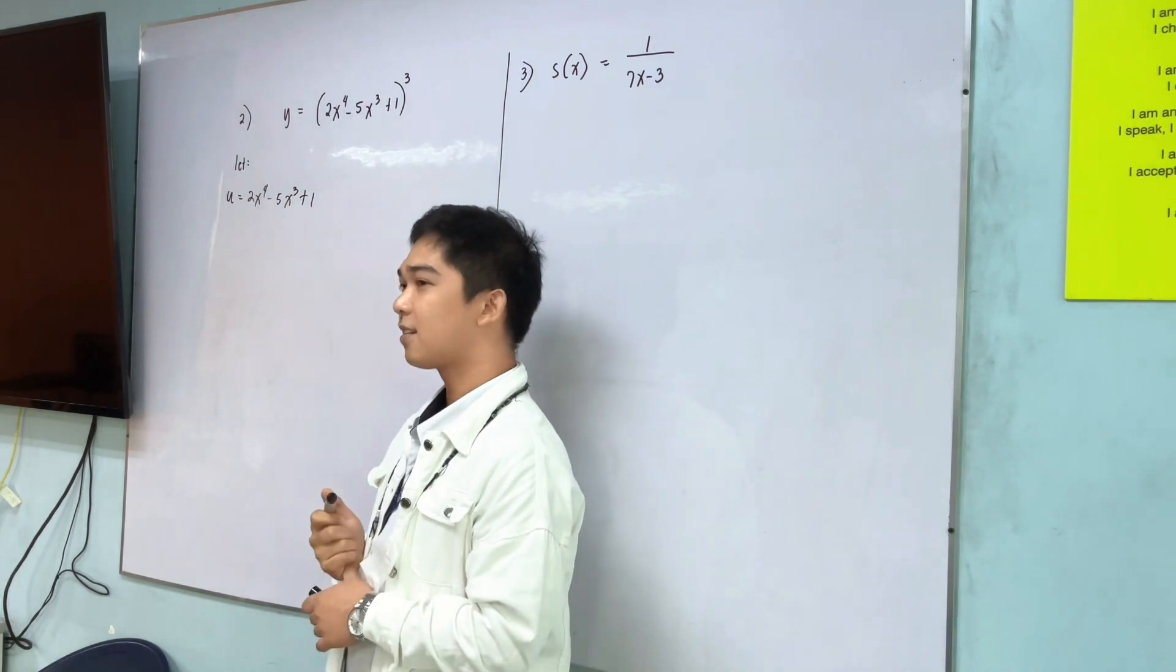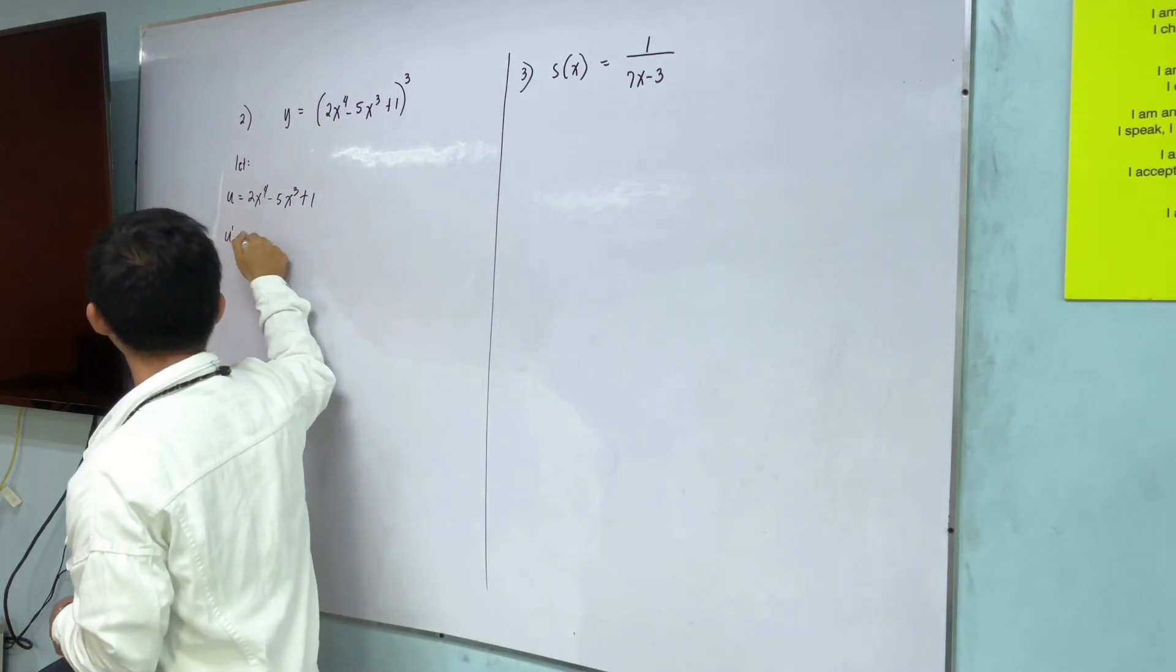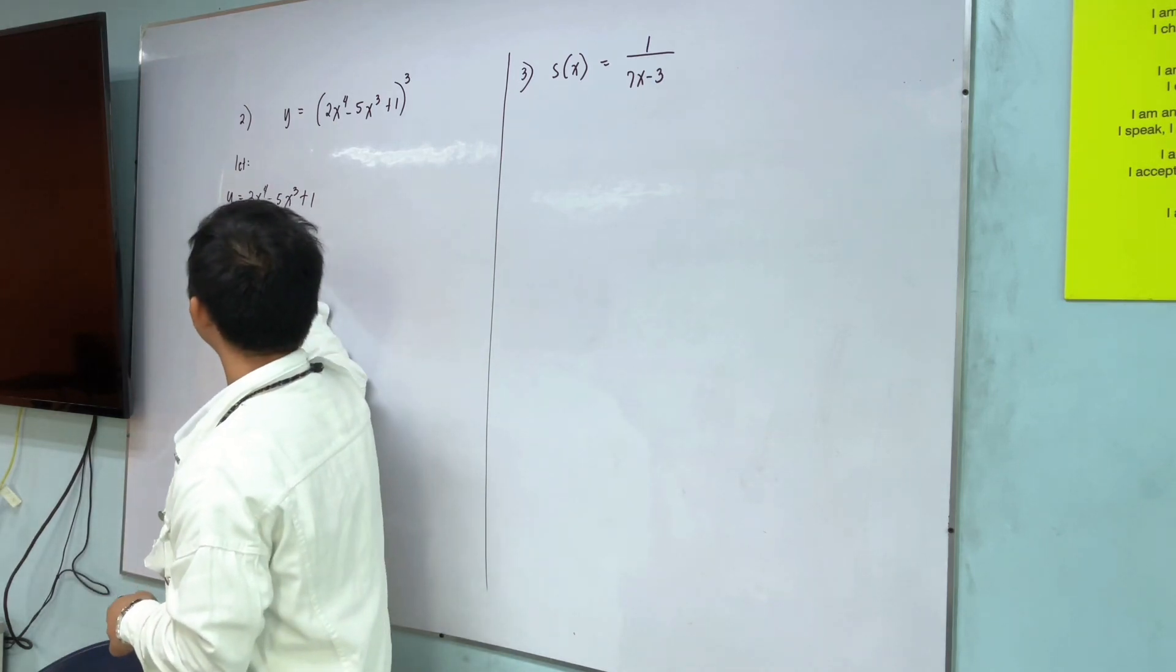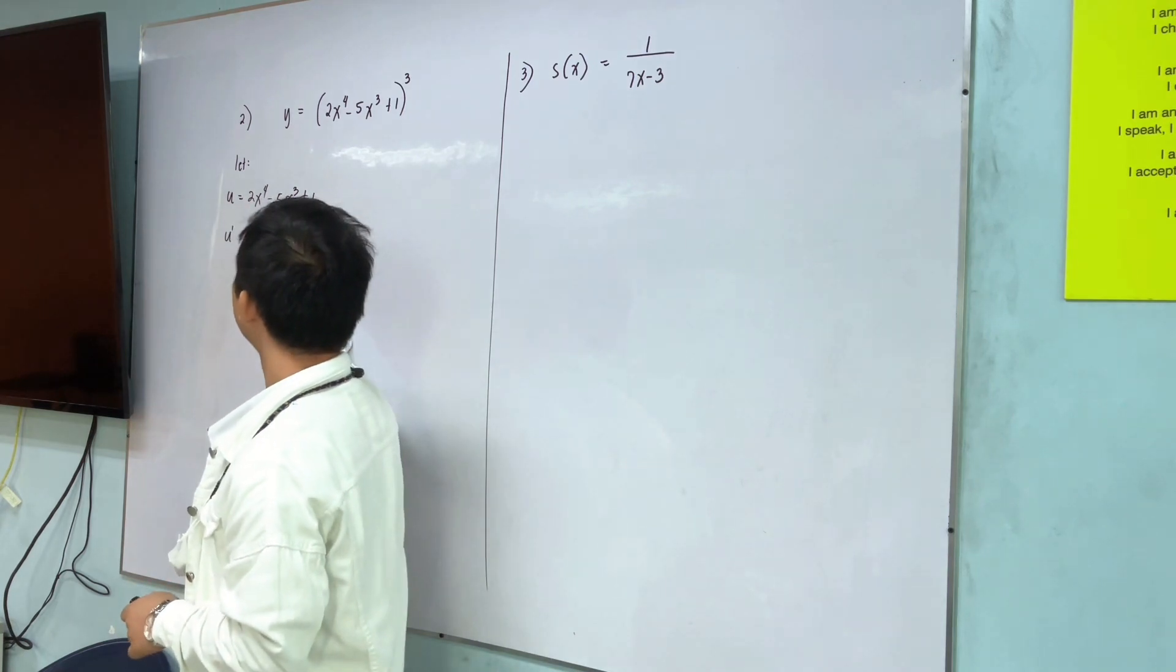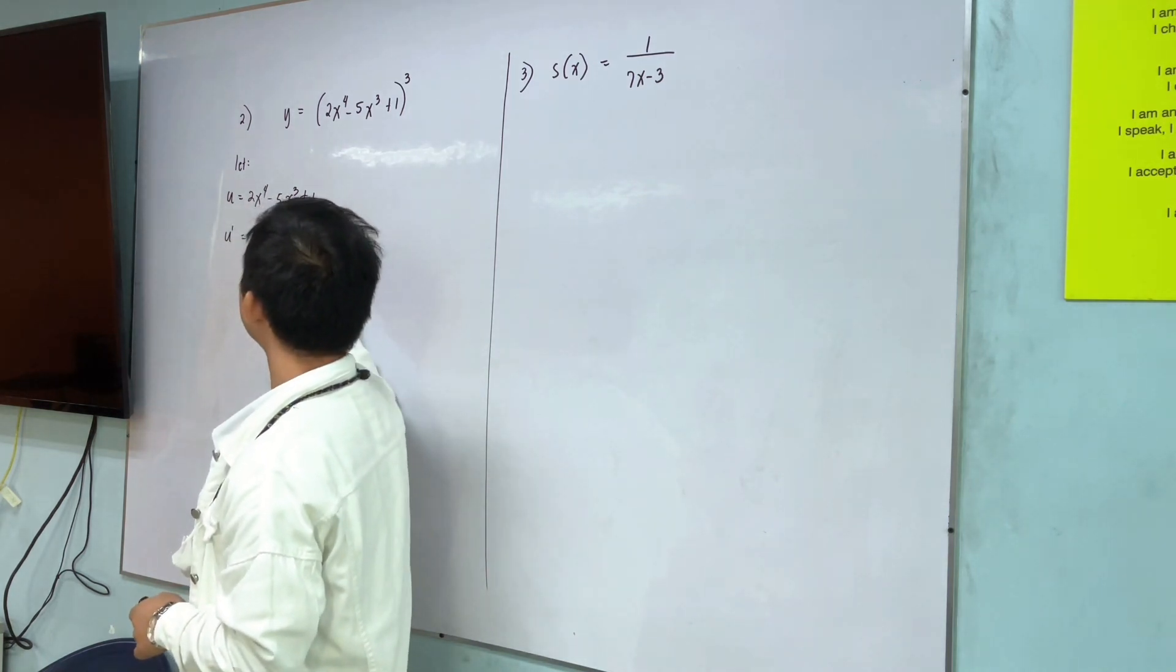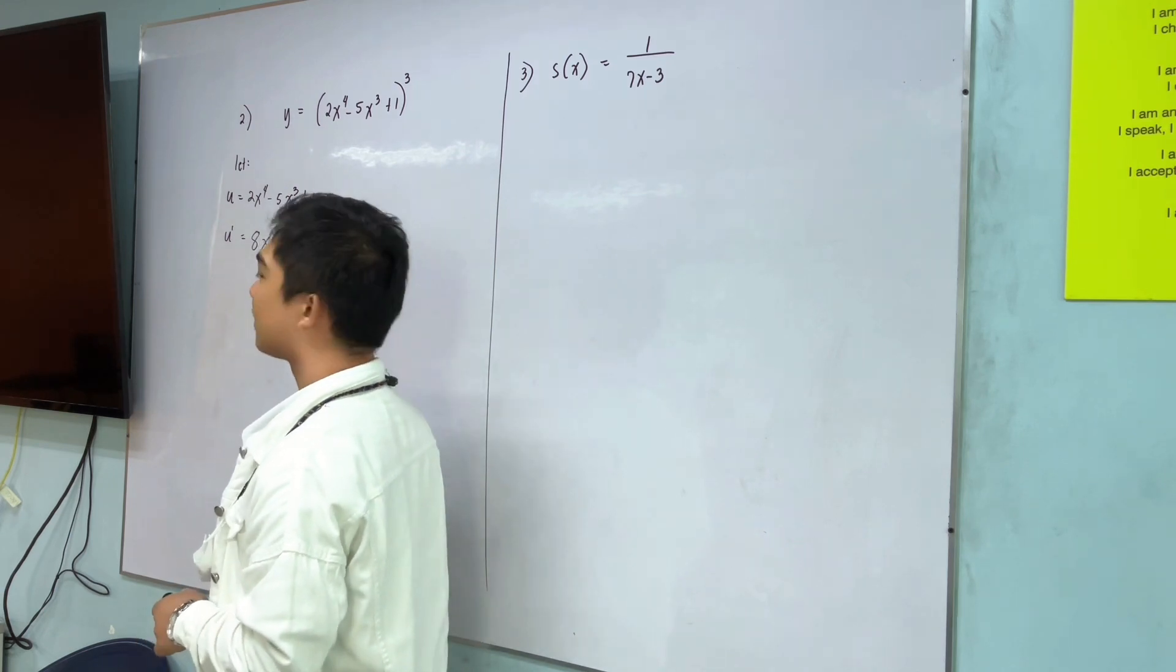Next. So, derivative of u is 8x cubed minus 15x squared. Then? Yun lang. Wala na, sir.